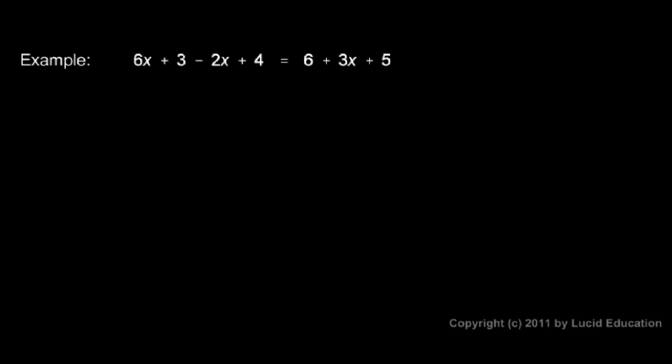So this left side can be simplified. The same thing happens on the right. I have a 6 and a 5. Those are like terms. The 6 and the 5 can be combined, so the right side can be simplified.